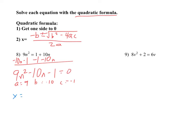We have our a value as 9, b is negative 10, and c is negative 1. So we're going to follow the formula. x equals negative b — now b is negative 10, so negative negative 10 is positive 10. When we have that negative b out front, I always think of it as 'opposite b.' So in the radical we have negative 10 in parentheses squared, minus 4 times a, which is 9, times c, which is negative 1, all over 2 times 9.